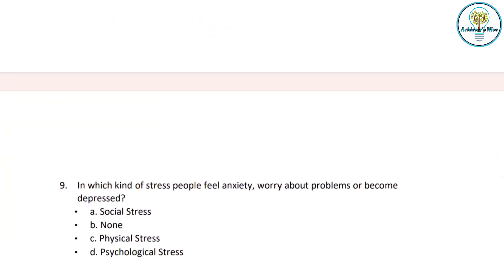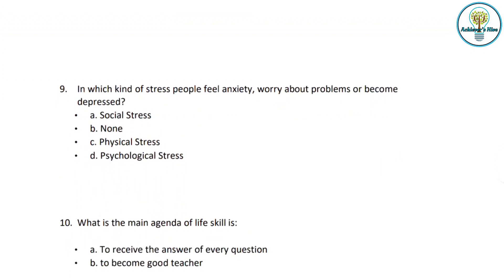Next question: In which kind of stress do people feel anxiety, worry about problems, or become depressed? Options: social stress, physical stress, psychological stress, or none of these. In psychological stress, anxiety, worry, and depression come to the forefront directly. Social and physical stress have different primary components. So option C — psychological stress — is the correct answer.